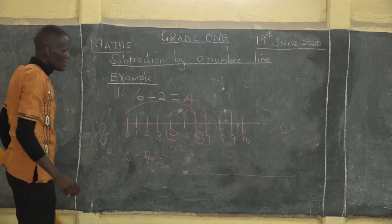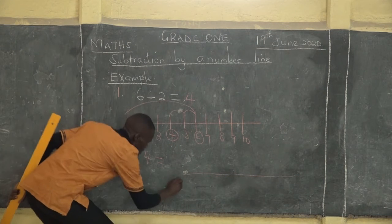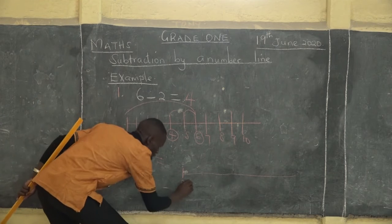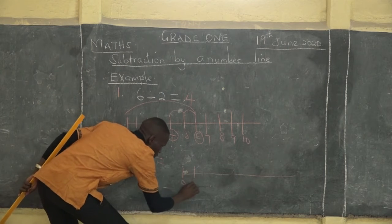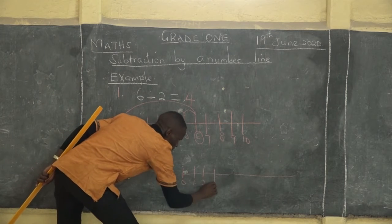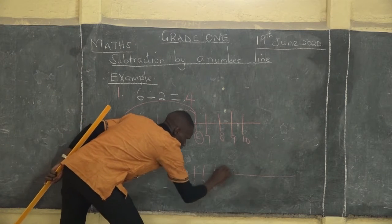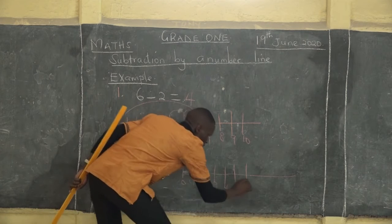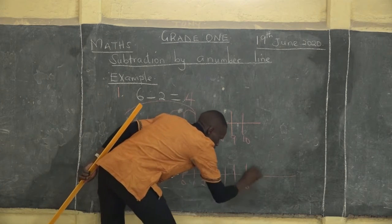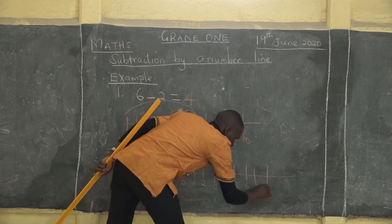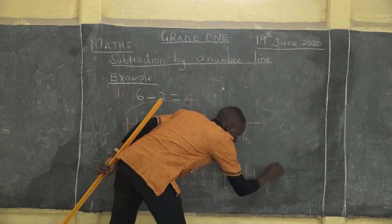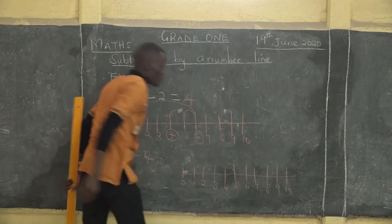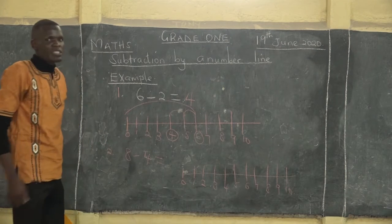After you draw your number line, show your numbers on the number line starting from zero: one, two, three, four, five, six, seven, eight, nine, ten. So we can stop at ten.